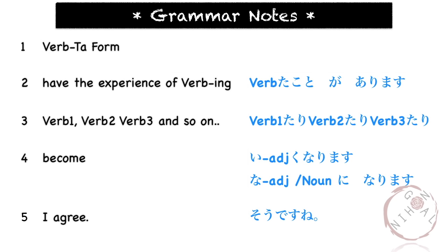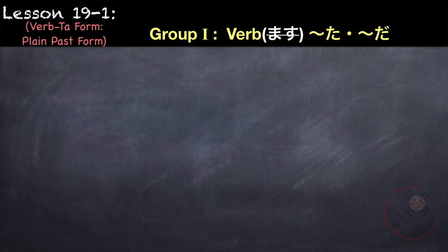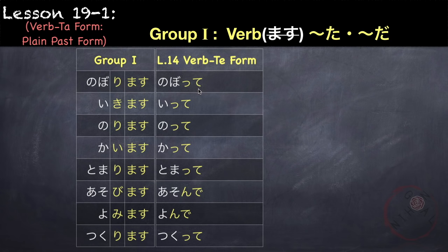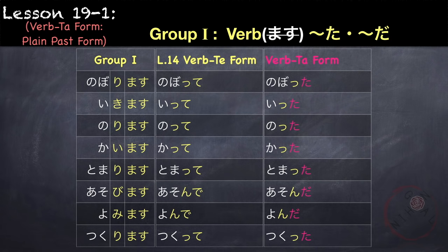Here are the grammar points that we would learn in this lesson. The first one is the ta form of the verb. The ta form of the verb is also known as the plain past form of the verb. This is the same as verb mashita. So to modify verbs into ta form, the rule is the same as modifying it to te form. But instead of te, we change it to ta. And for de, we change it to da.